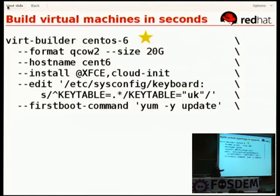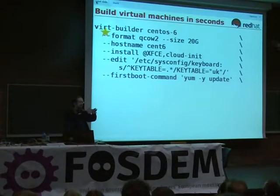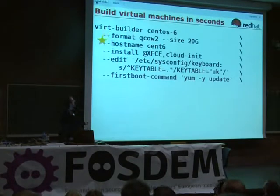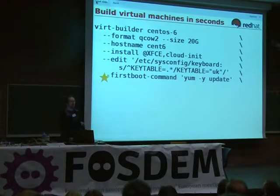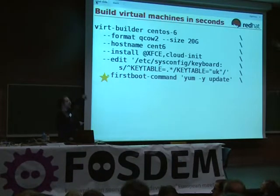So what does VirtBuilder do? VirtBuilder can build you a CentOS 6 guest. It can change the format of the output disk image or the size using VirtResize, and using LibGuestfs to go in there and resize the partitions and the logical volumes correctly so the guest is already resized when it starts running. It can change the hostname and timezone, you can install packages, edit configuration files in many different ways, and you can run scripts at various points during the build, or when it actually first boots.